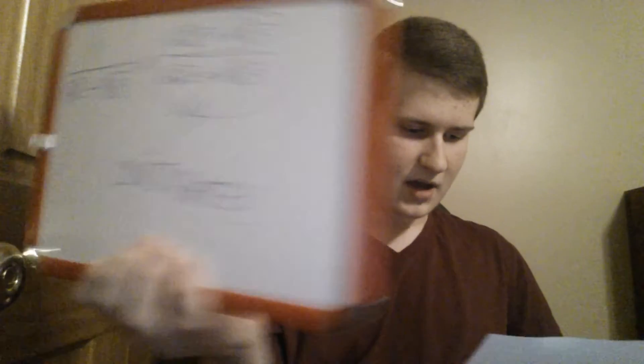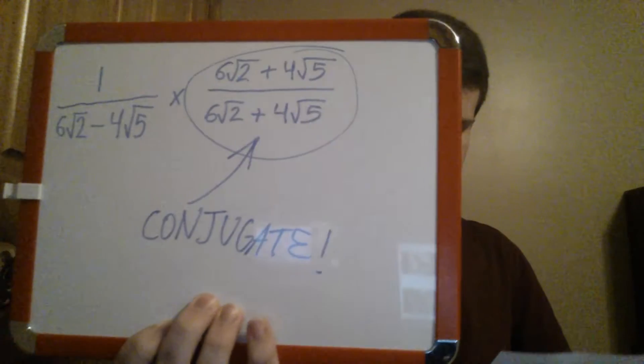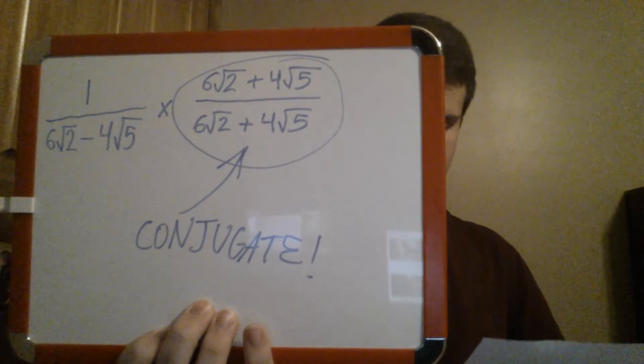If it's an equation, don't go bailing — I'm unveiling. It's called the conjugate. Here's how it's formed: keep the first number intact, make the second opposite. Multiply like before. Distribute. Now you've been informed.